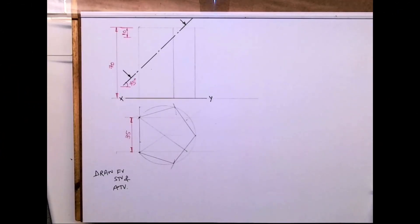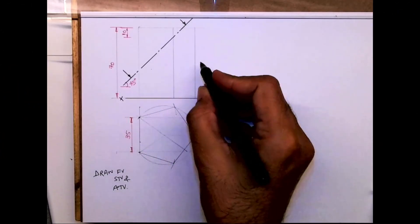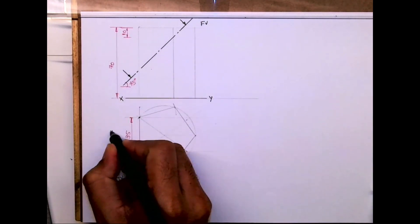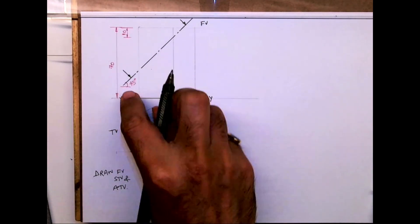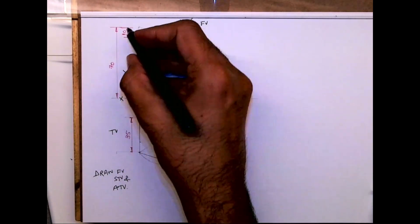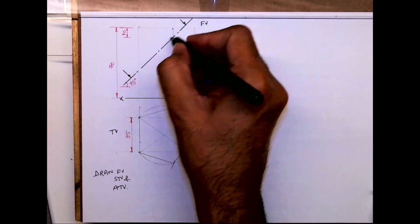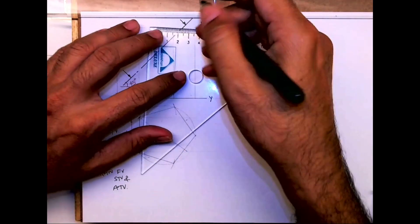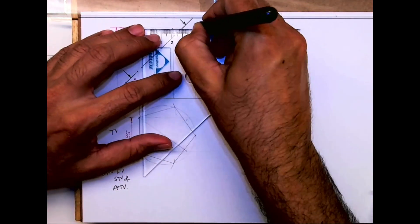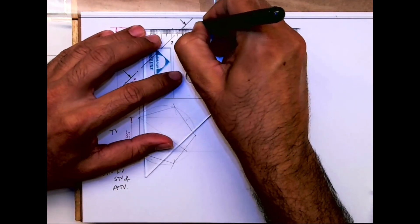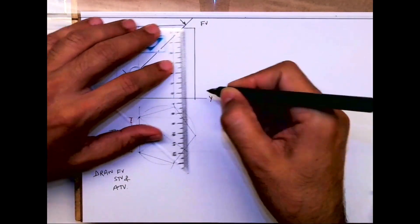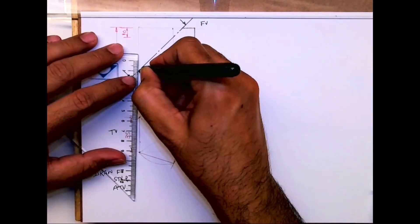Welcome to technical drawing. Today we have a front view and top view, and we need to draw a cutting plane line at 45 degrees. We have to draw the front view, sectional top view, and auxiliary top view. First, I will draw the object after the cutting plane line.